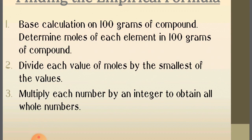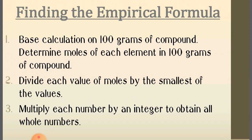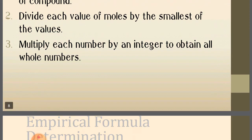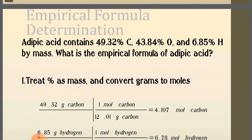Base the calculation on 100 grams of compound. Since percent composition gives the percentage of each element and the total is 100, in 100 grams we can find the moles of each element. Then divide each mole value by the smallest mole, and multiply each number by an integer to obtain whole numbers — that gives the empirical formula.